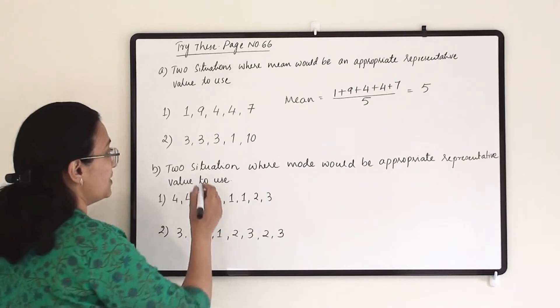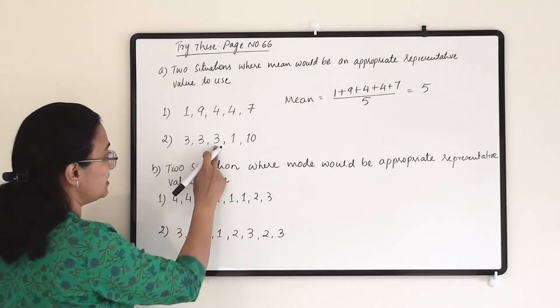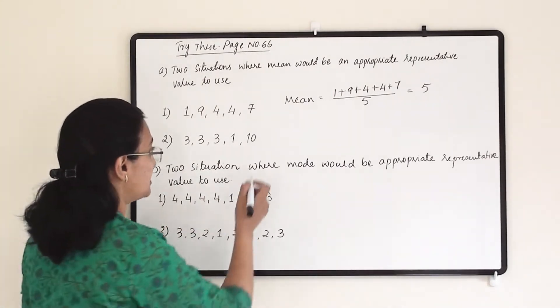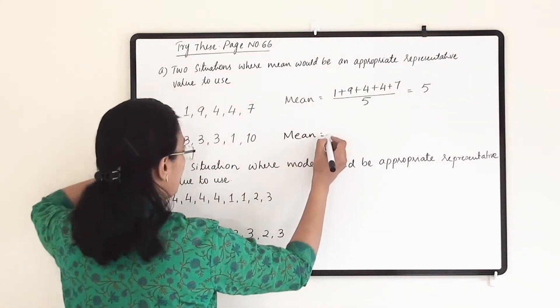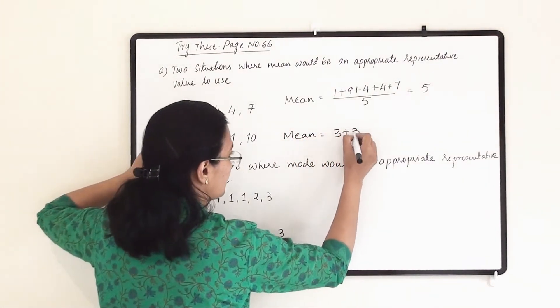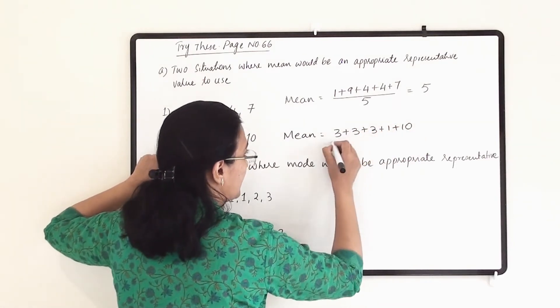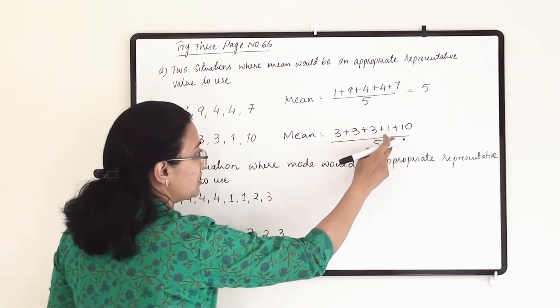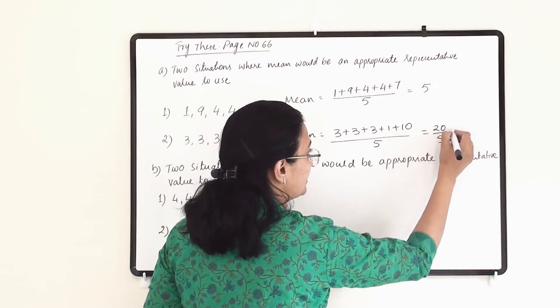Next, when we are finding out mode for this data, then you can see that 3 is appearing multiple times. So mode will be 3. But if we find out the mean, then we have to add all this and divide it by 5. So addition of these numbers will give us 20, and 20 divided by 5 will give us 4.